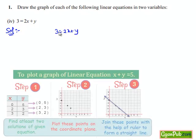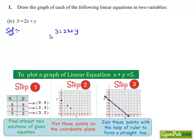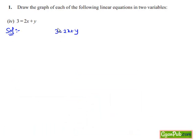To obtain the graph of a linear equation in two variables, it is enough to plot two points corresponding to two solutions and join them by a line. Now, let us find two solutions of this equation.